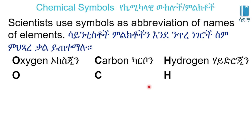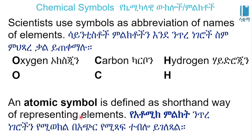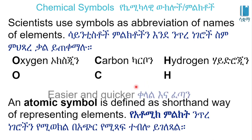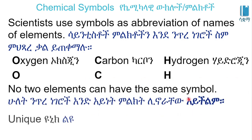The atomic symbol is defined as a shorthand way of representing elements. If you look at the atomic symbol, they are easier and quicker. No two elements can have the same symbols. The nature of each unique element is unique.